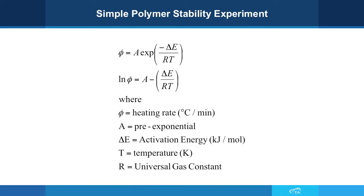It's based on the Arrhenius function, and what we're going to do here is set the heating rate, which we represent by the Greek letter phi, equal to the Arrhenius function. We take the natural log of both sides and obtain basically a line of the form Y equals MX plus B, where phi is the heating rate. The intercept of the line is A, which is our pre-exponential. Delta E is the activation energy in kilojoules per mole. T is our temperature in degrees Kelvin, and R is our universal gas constant.